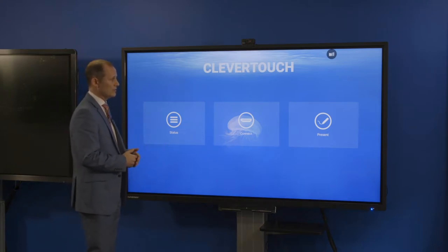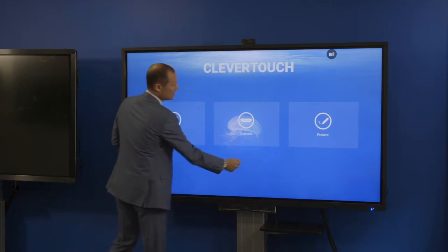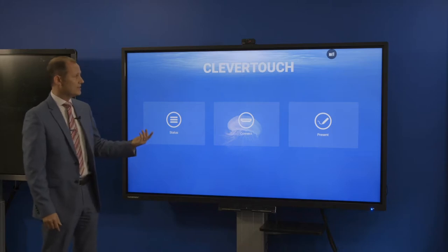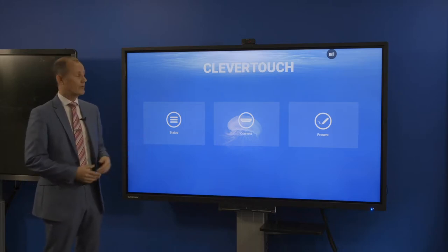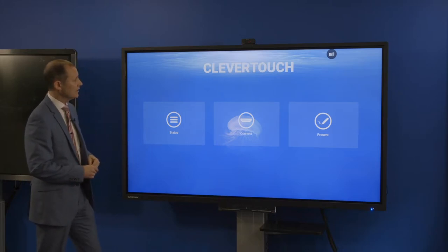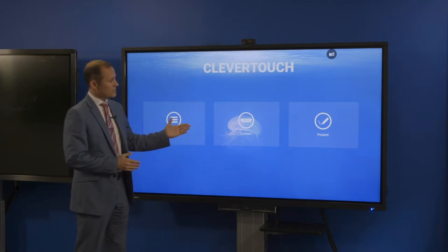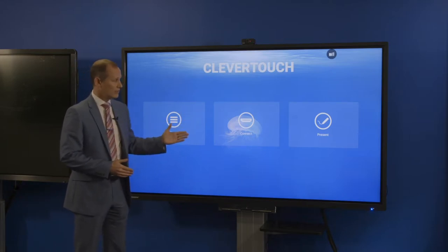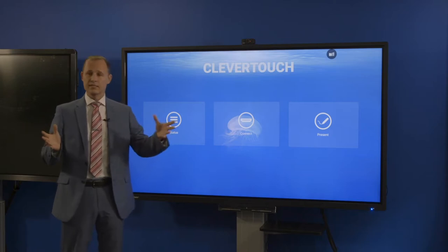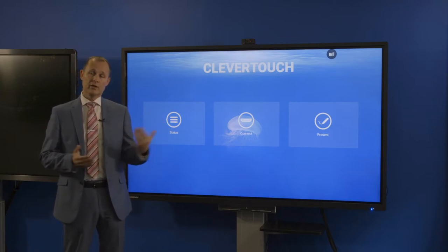The screen also has four mil toughened glass on it, so it's a tough unit should you wish to wheel it around and move it rather than mount it onto the wall. You can also see that it's a non-reflective surface, so the lighting in the room is not going to affect the screen.